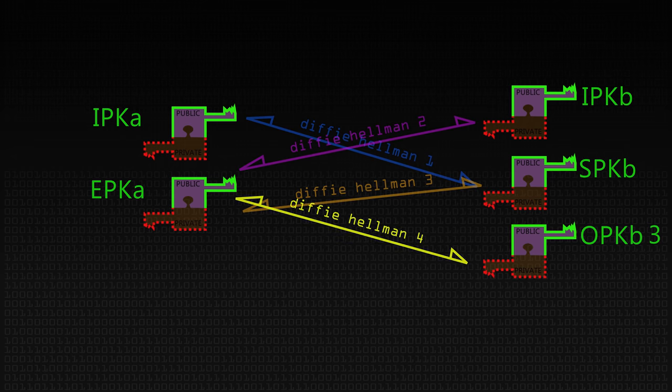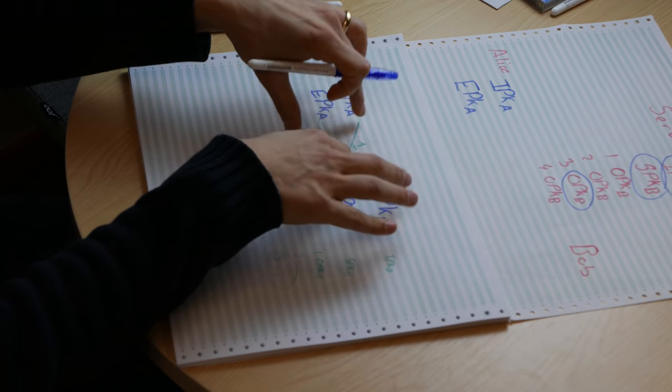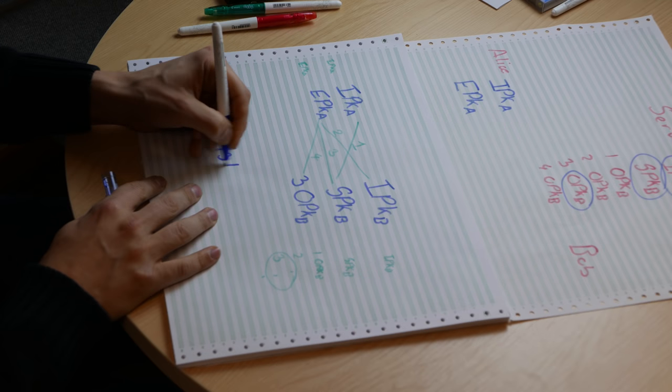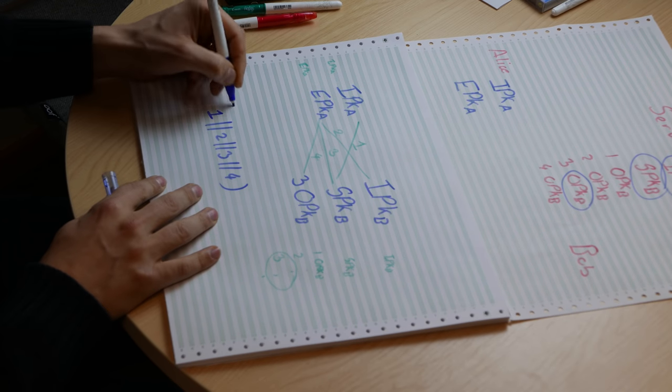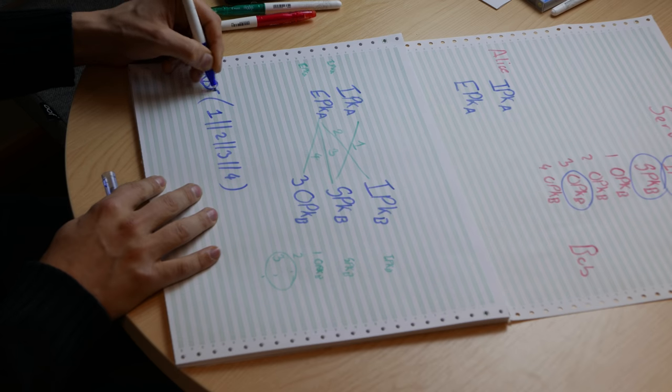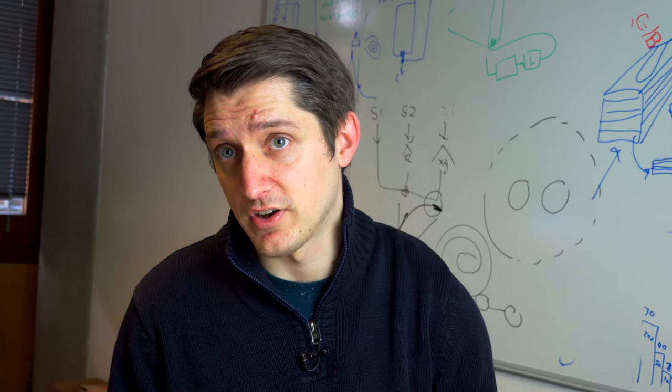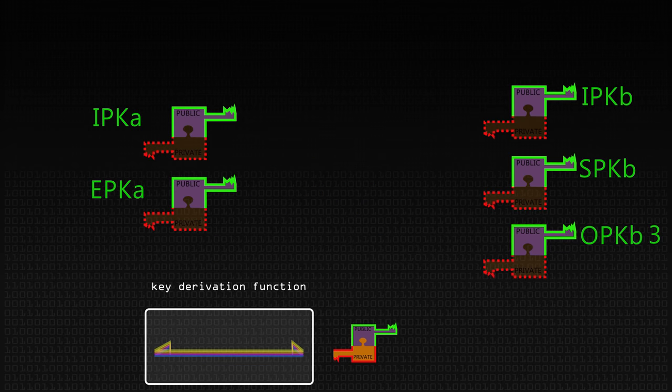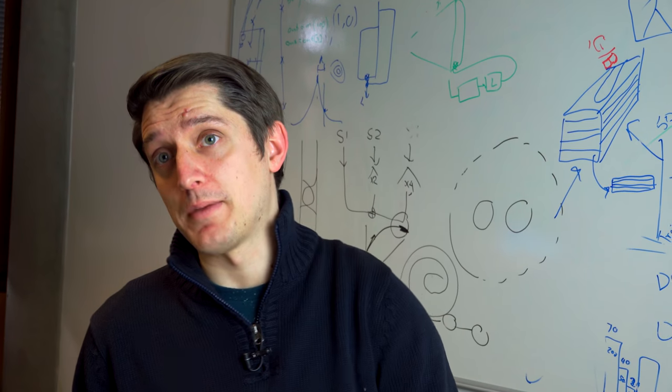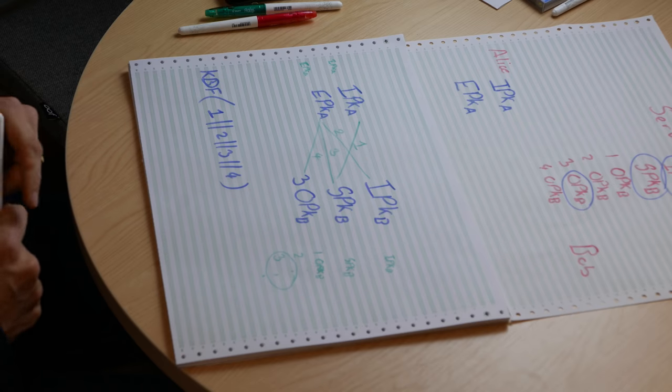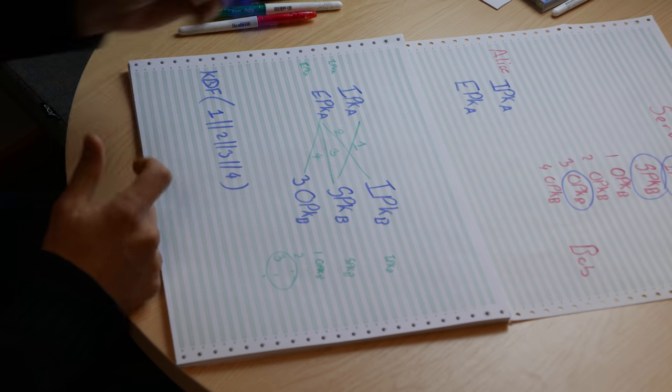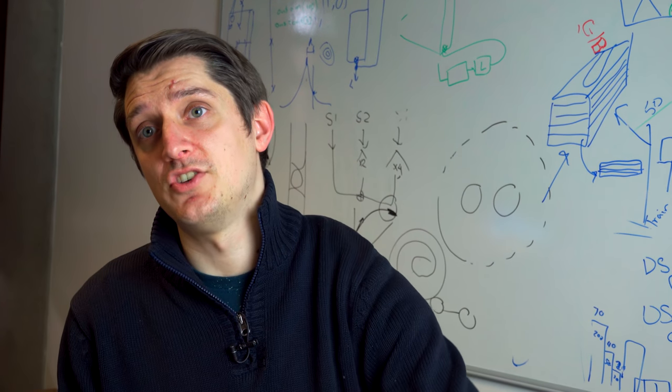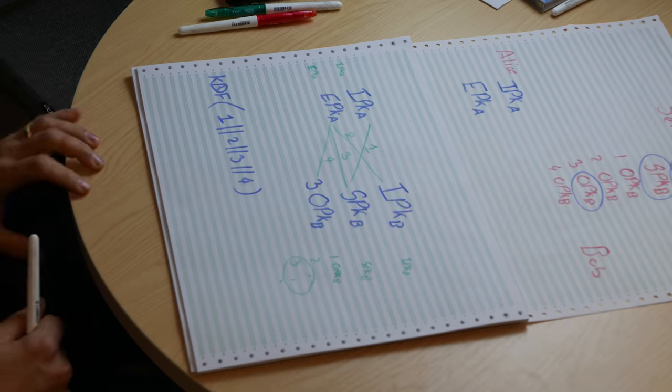Alice is going to perform a Diffie-Hellman key exchange four times. So she's going to do this one here, she's going to do this one here, she's going to do this one here, it's number three, and she's going to do this one here, number four. So she's bringing all the keys into play. Then she's going to produce one master key with all of these pre-master secrets. She's going to take one, append it to two, append it to three, append it to four. She's going to put that through something called a key derivation function, which for the sake of simplicity we'll just say is very similar to a hash function. That's going to produce her master secret. She can then use that to encrypt things. And theoretically, when she sends a message to Bob, Bob will be able to do the same thing.